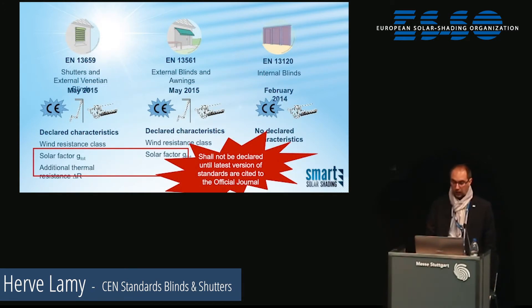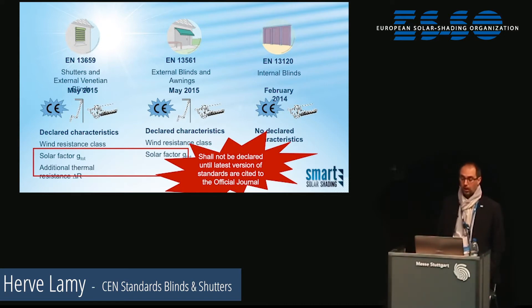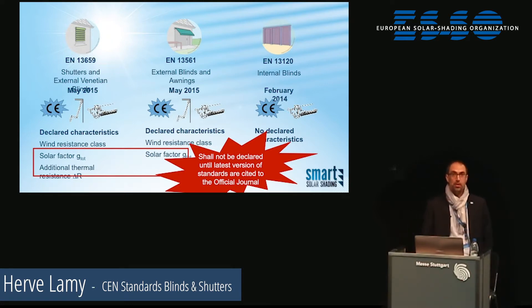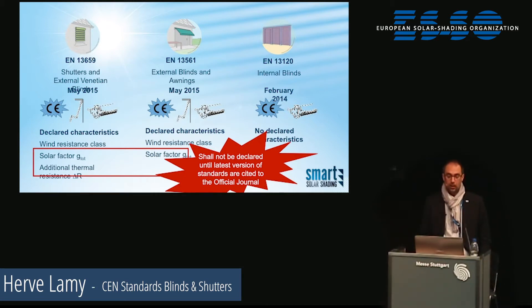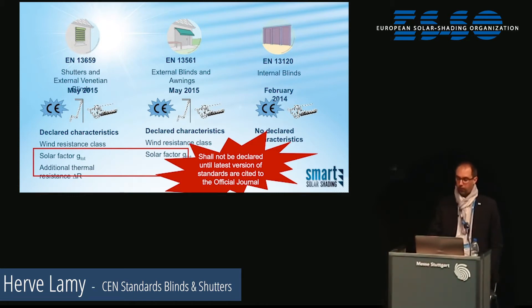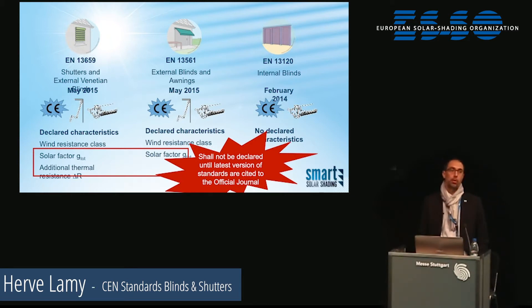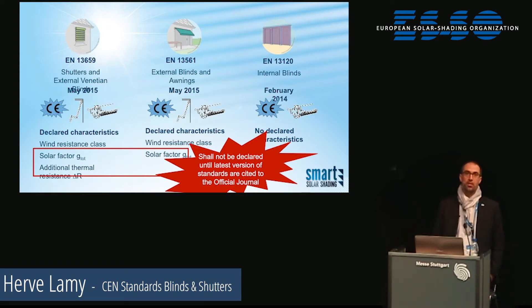What about CE marking? The three product standards — the most important standards for the industry — have been revised recently and published in the last three years. EN 13659 and EN 13561 were revised and published in May 2015, and the internal blinds standard was published in 2014. They are all connected to European directives and regulations, providing specifications to apply the CE marking in Europe.